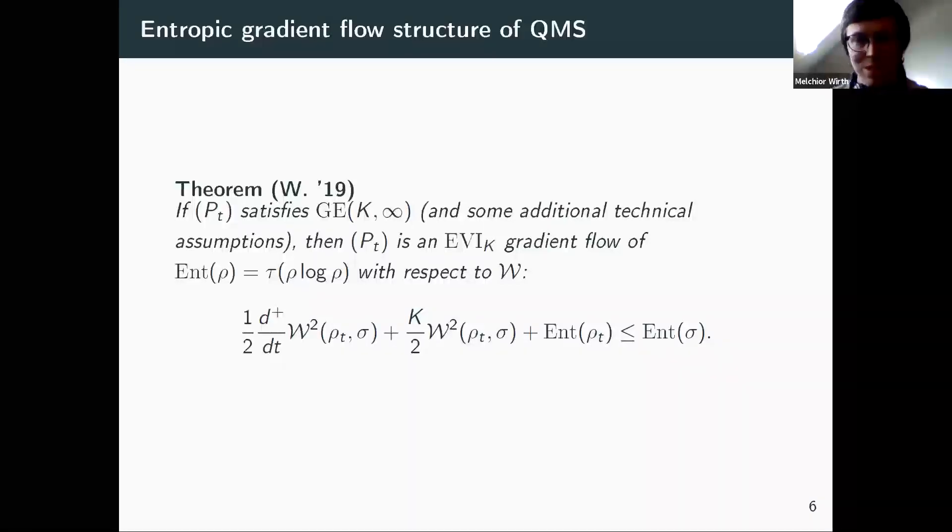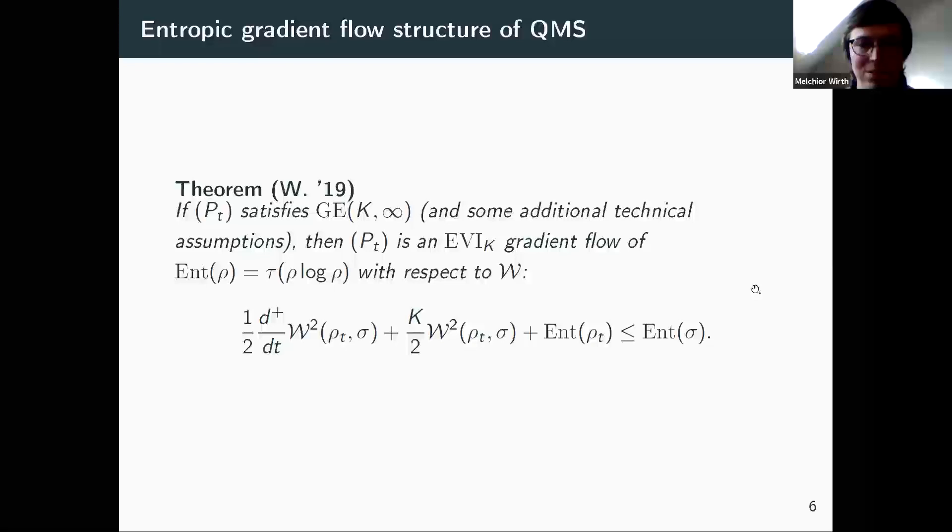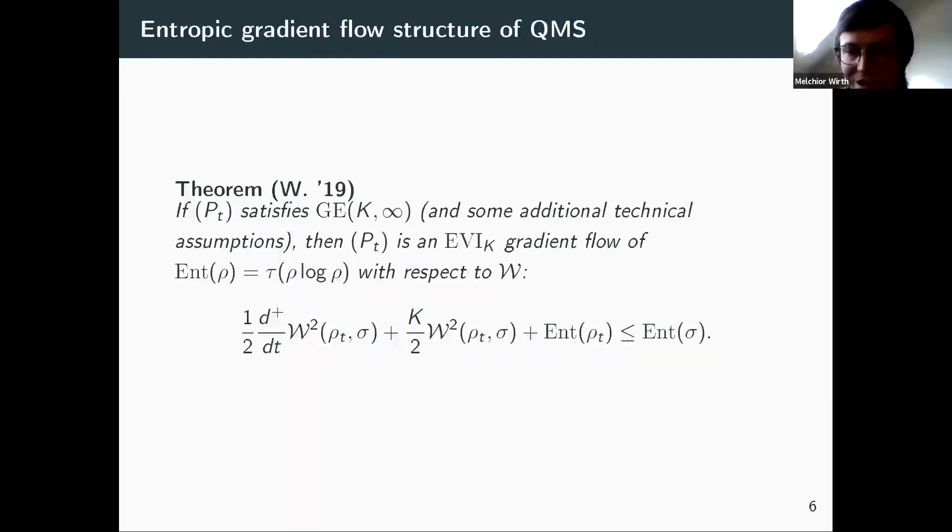And here, once again, this can be understood as Ricci curvature. Namely, again, for Riemannian manifolds or more general, these metric measure spaces people in differential geometry study right now. For these, the heat flow is an EVI_K gradient flow of the entropy if and only if the Ricci curvature is bounded below by K. This goes back to Ambrosio, Gigli and Savaré. So in this sense, we could say that P_t satisfies AGS curvature bound from below by K.